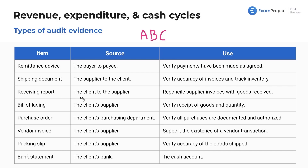The receiving report goes from the client to the supplier. It is used to reconcile supplier invoices with the goods received — basically verifying what was received and tying that together. So you're confirming you received all the inventory you needed.